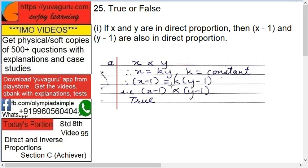Next, true or false. If X and Y are in direct proportion, then X minus Y and Y minus Y are also in direct proportion. Let's check this. X is directly proportional to Y, so both in numerator. So X equals K Y, K is constant. Now what we'll do? Put it X minus Y for and Y minus Y for both. So X minus Y equals K into Y.